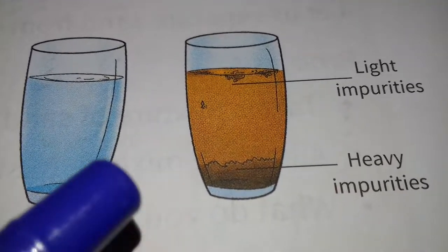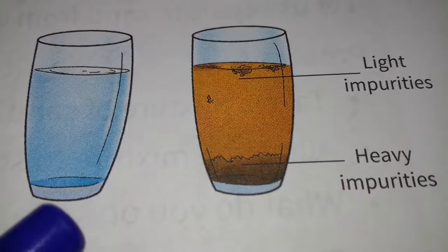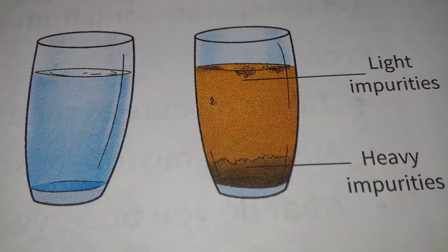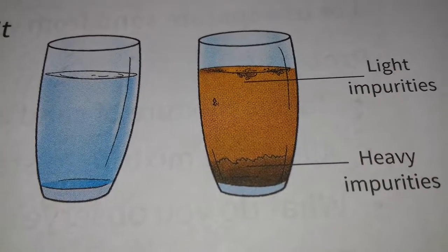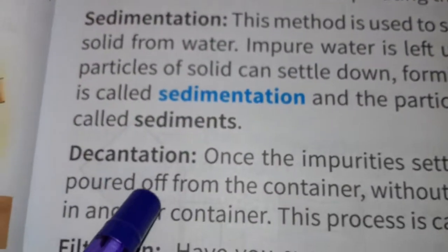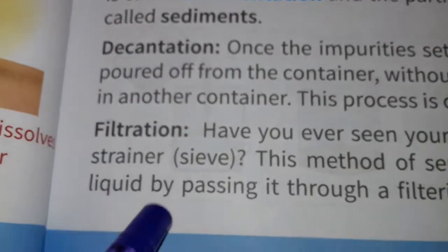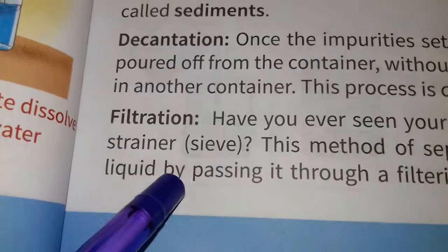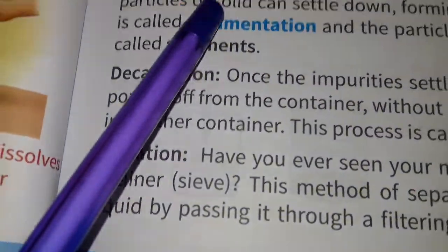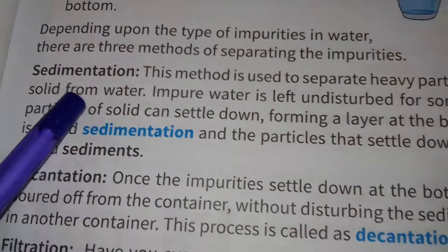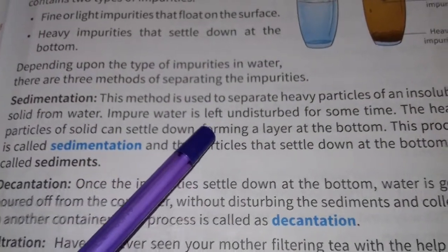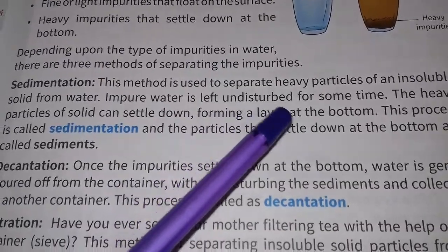Depending upon the type of impurities in water, there are three methods of separating the impurities. These are sedimentation, decantation, and filtration. Sedimentation is the method used to separate heavy particles of an insoluble solid from water.